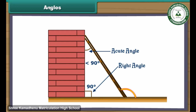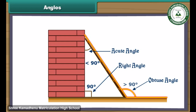Now let us look at the third angle that the ladder makes with the ground. We take the ground as the base. The ladder is not vertical — it is tilted out. Such an angle is called an obtuse angle and its measure is more than 90 degrees.